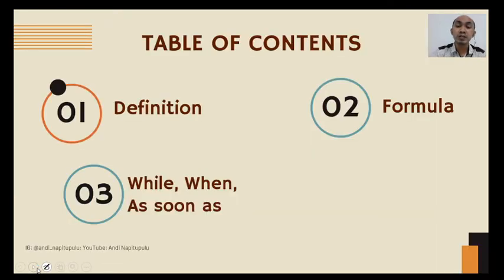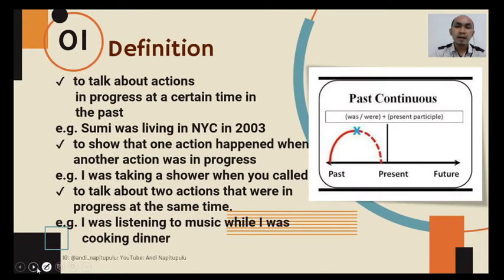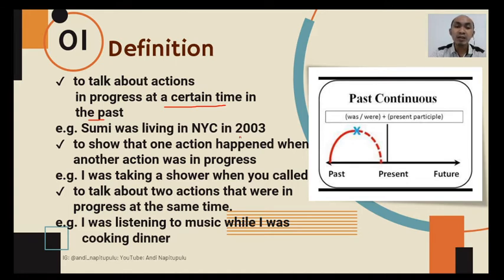We will learn about the definition, the formula, and while, when, and as soon as. The definition of past continuous tense — first, to talk about actions in progress at a certain time in the past. Remember, a certain time in the past. For example: Sumi was living in New York City in 2003. The second definition is to show that one action happened when another action was in progress.